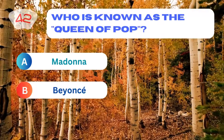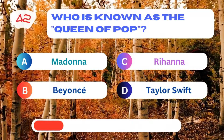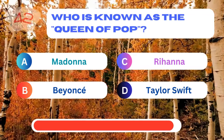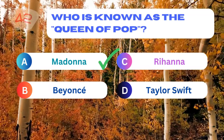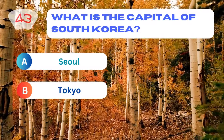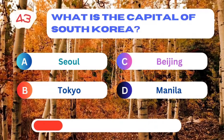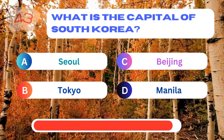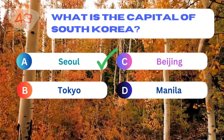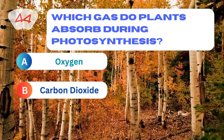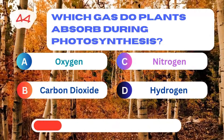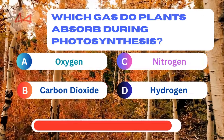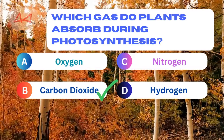Who is known as the queen of pop? Madonna. What is the capital of South Korea? Seoul. Which gas do plants absorb during photosynthesis? Carbon dioxide.